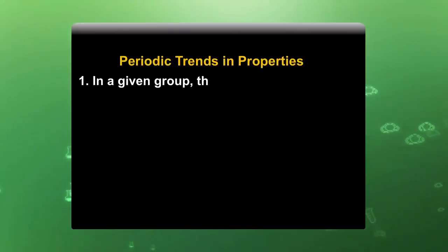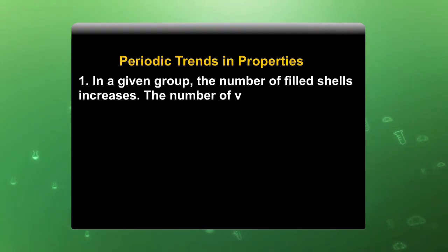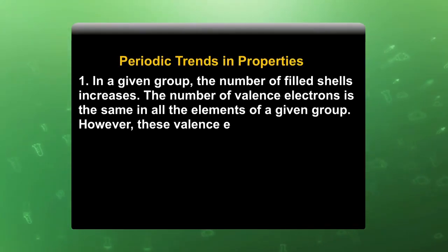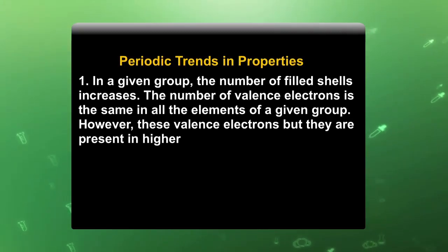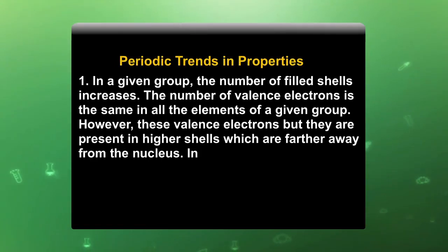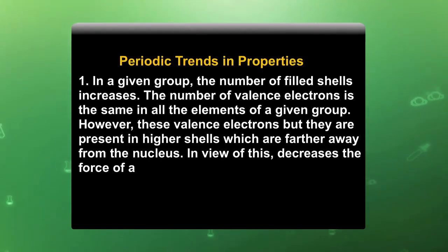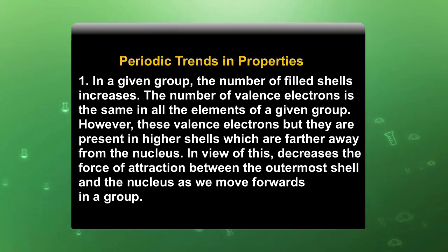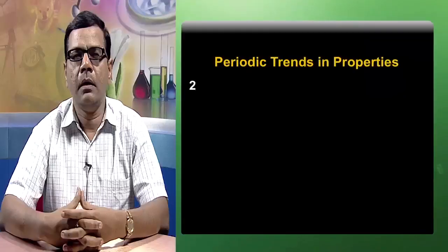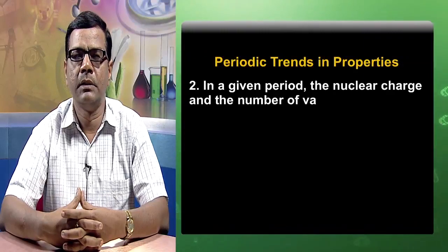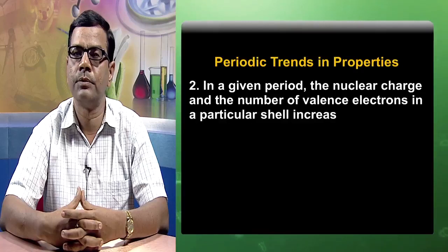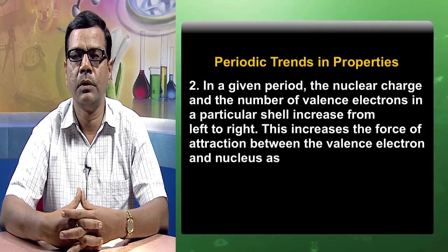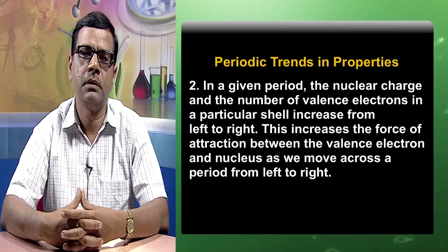In a given group, the number of filled shells increases while the number of valence electrons remains the same for all elements. However, these valence electrons are present in higher shells, which are further away from the nucleus. This decreases the force of attraction between the outermost shell and the nucleus as we move down a group. In a given period, the nuclear charge and the number of valence electrons in a particular shell increase from left to right, increasing the force of attraction between the valence electrons and the nucleus.